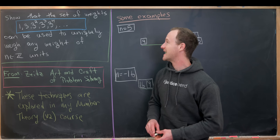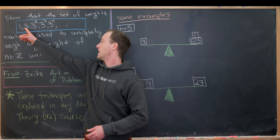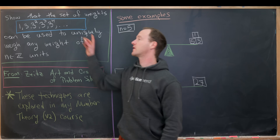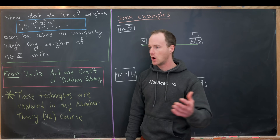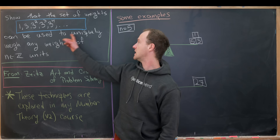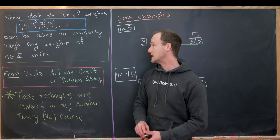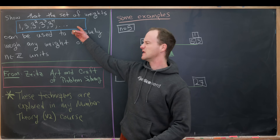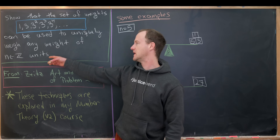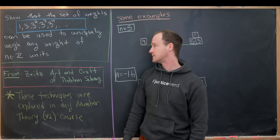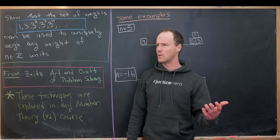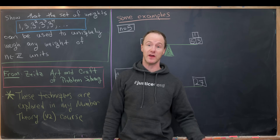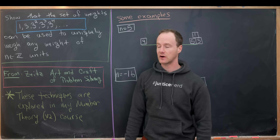We want to show that the set of weights 1, 3, 3 squared (in other words, 9), 3 cubed, 3 to the fourth, and so on — all powers of 3 — can be used uniquely to weigh any weight of integer units. You could think of these as grams, so it would be n units. And what does it mean for a weight to have negative integral units? Well, we'll spell that out as we play with the scales in our examples.